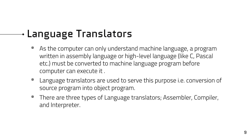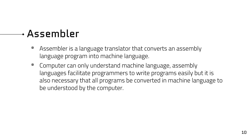There are three types of language translators: number one, assembler; number two, compiler; and number three, interpreter. An assembler is a language translator that converts an assembly language program into machine language. Assembly language facilitates programmers to write programs easily, but it is necessary that all programs be converted into machine language to be understood by the computer.